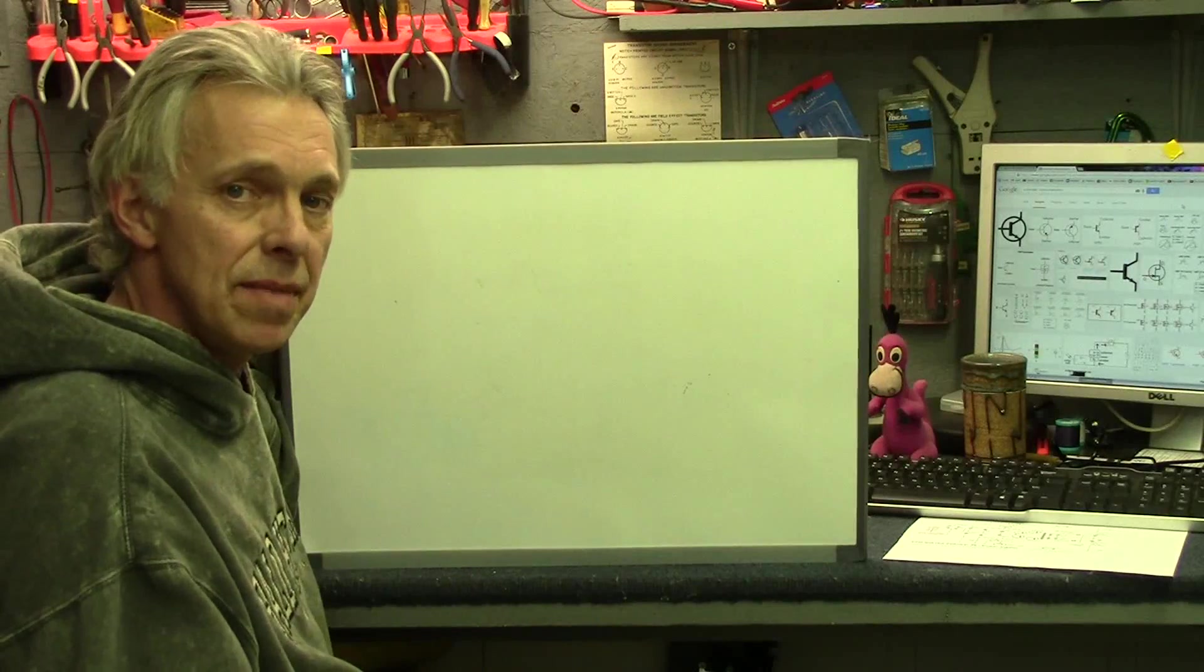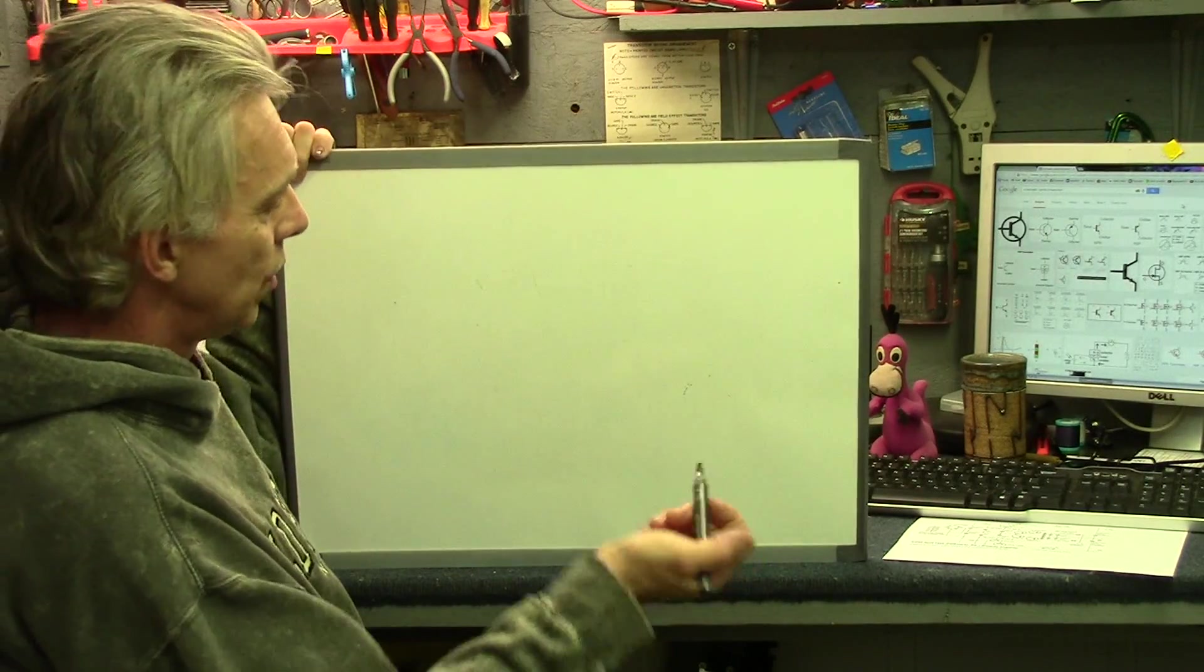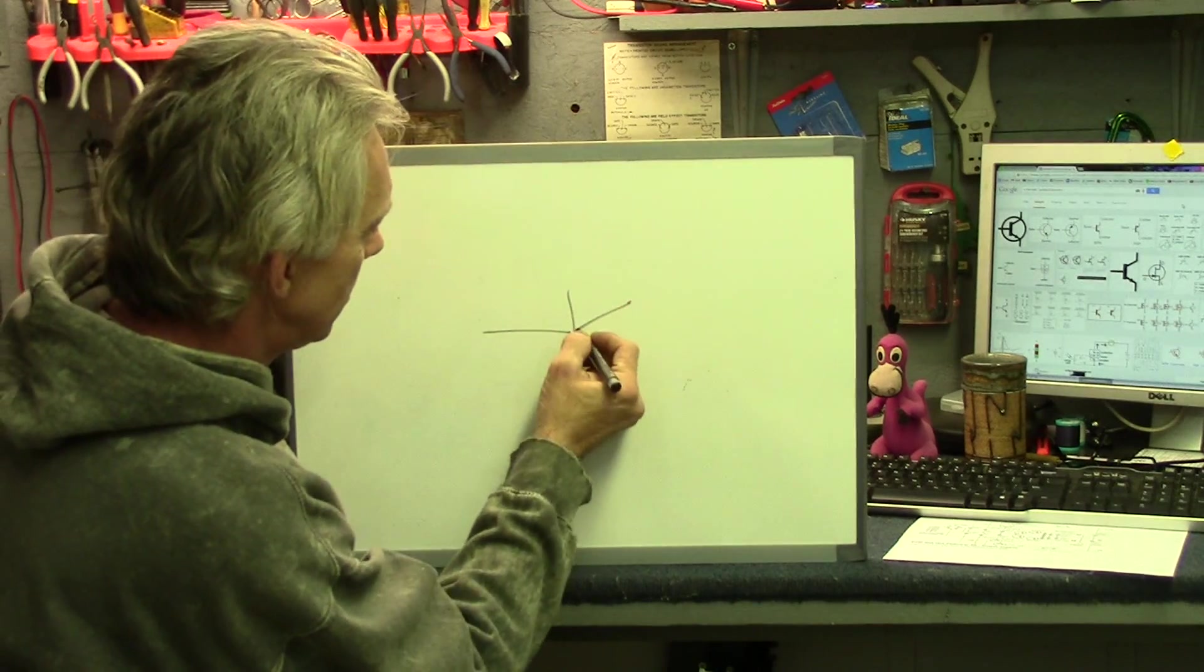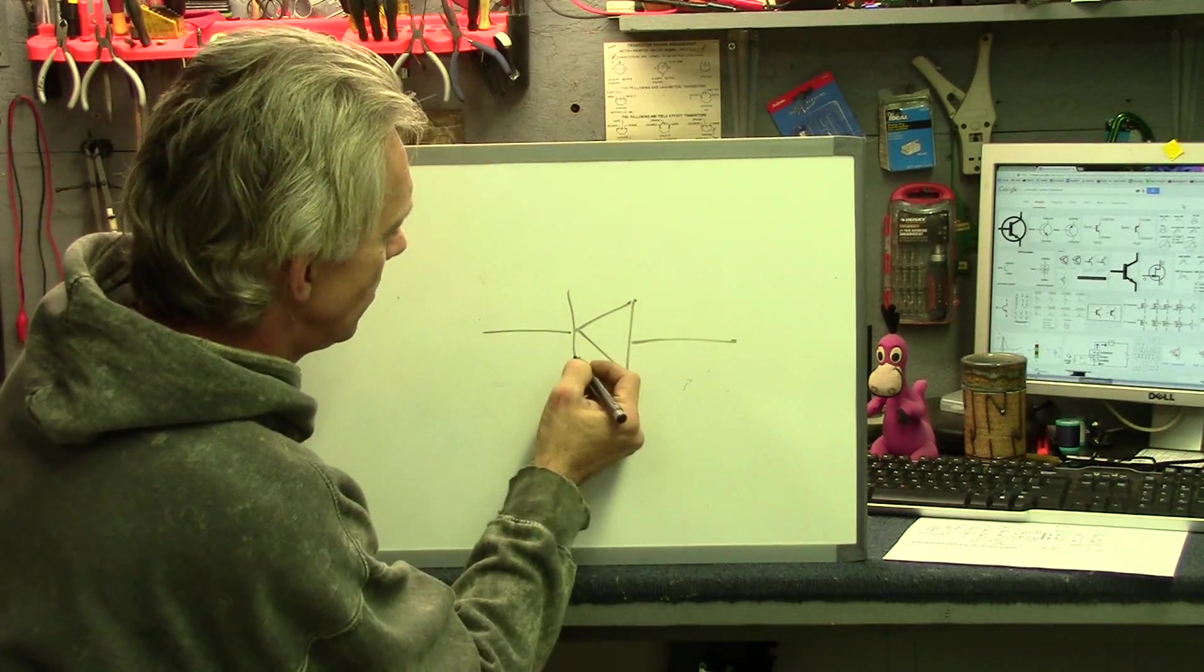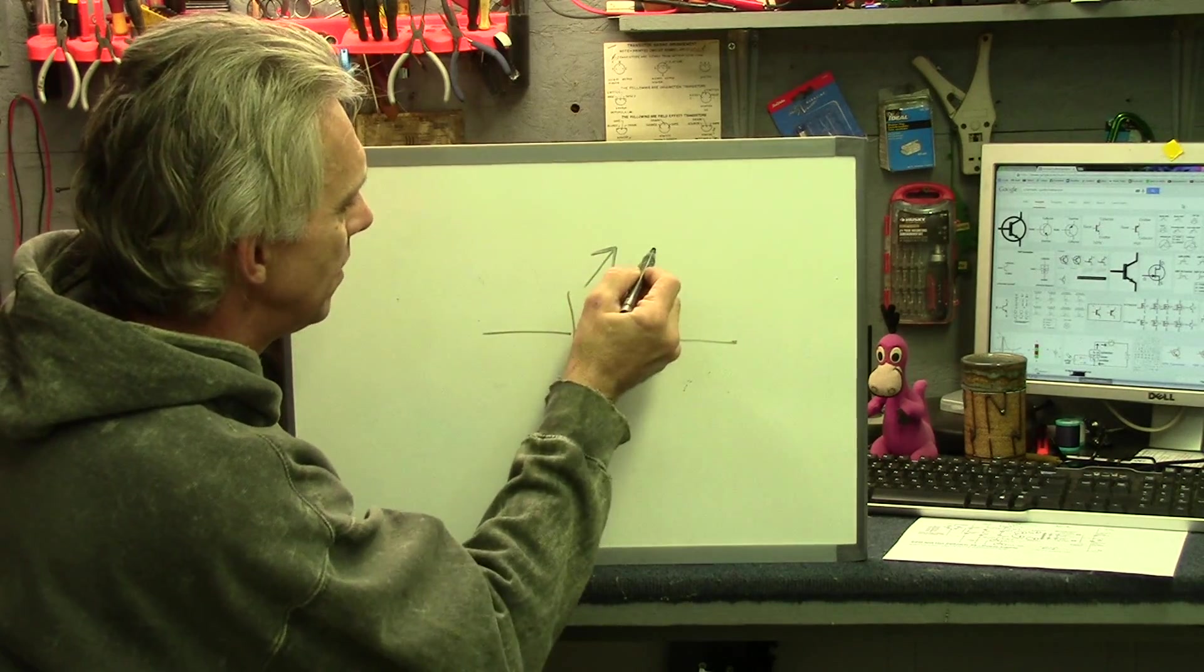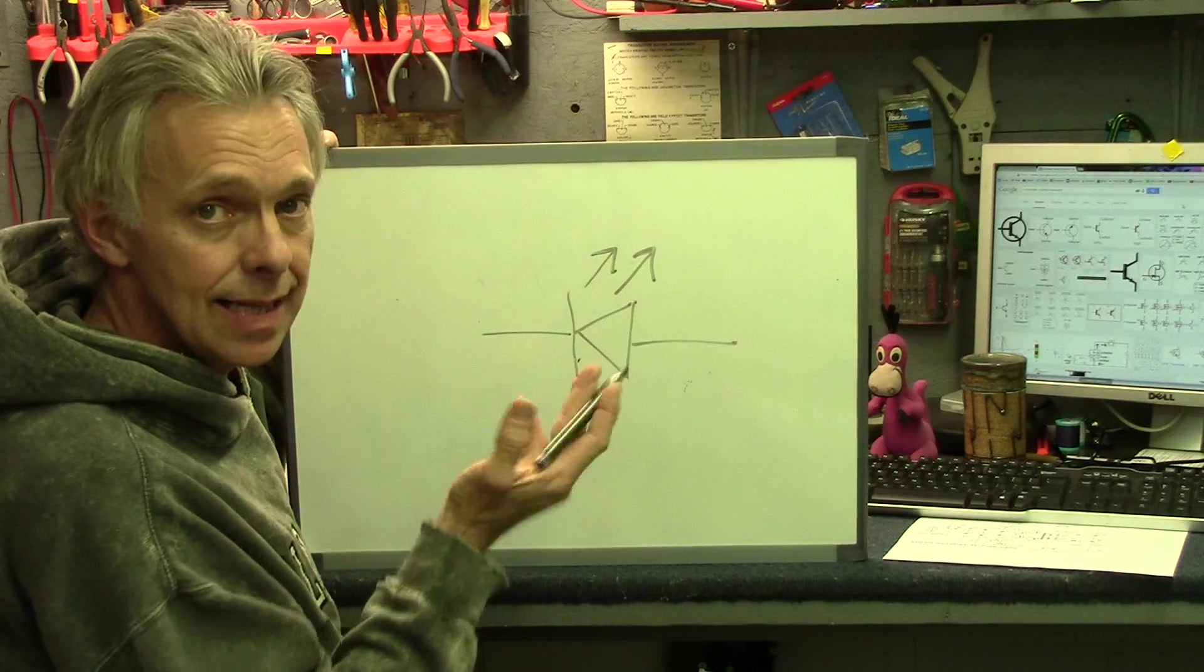A light-emitting diode, or an LED, would look like this. It would have the same symbol as a diode, but will have a couple of arrows pointing off from it, indicating that it is emitting light.